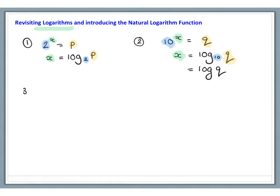In the generalised format, if a to the power of x equals b, we have base a, power x, with a to the x being equal to b. Then x is equal to log to the base a of the value b. Here's the base, here's x, and here's b.